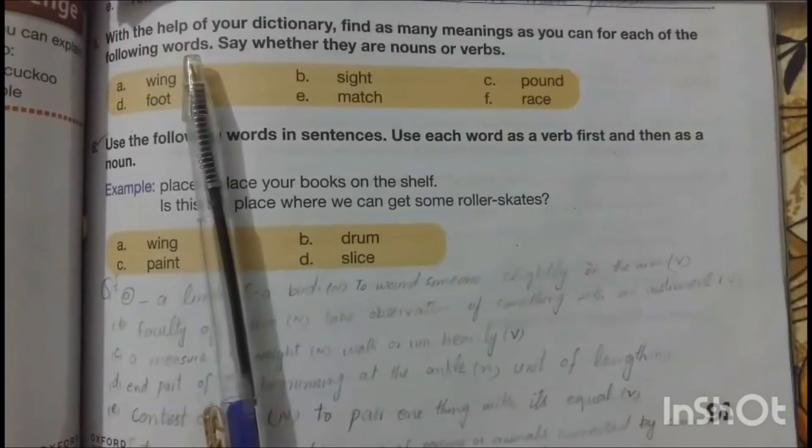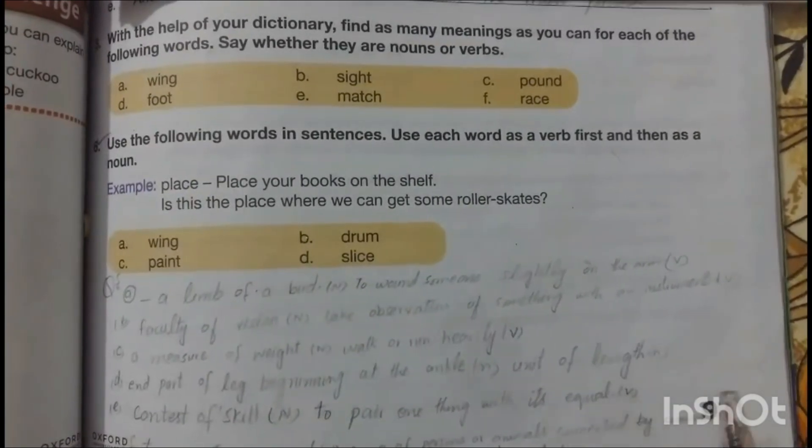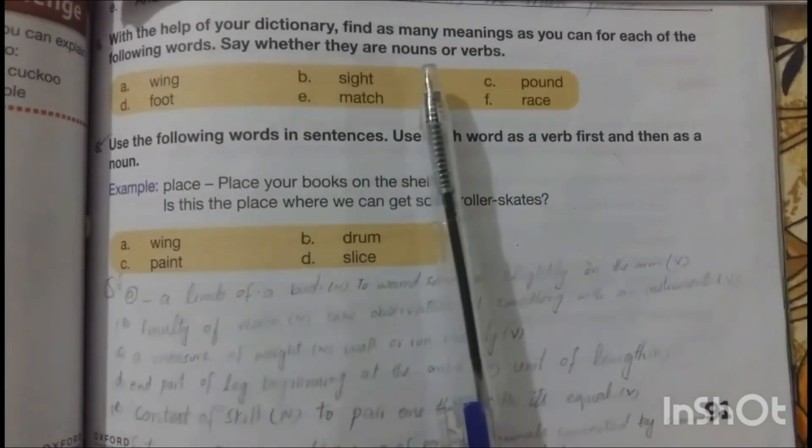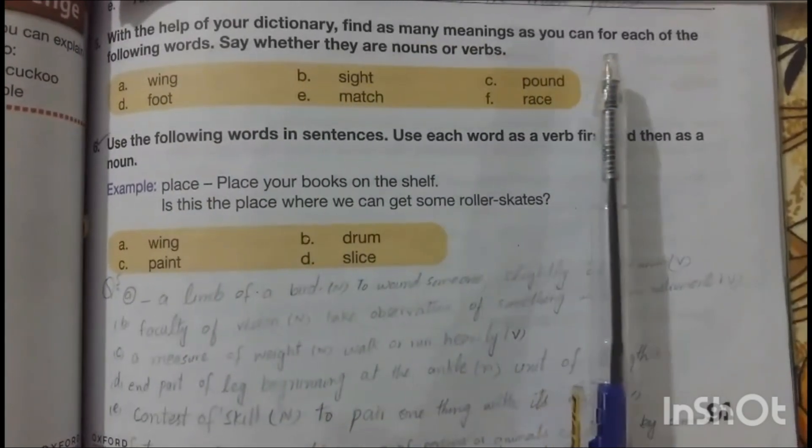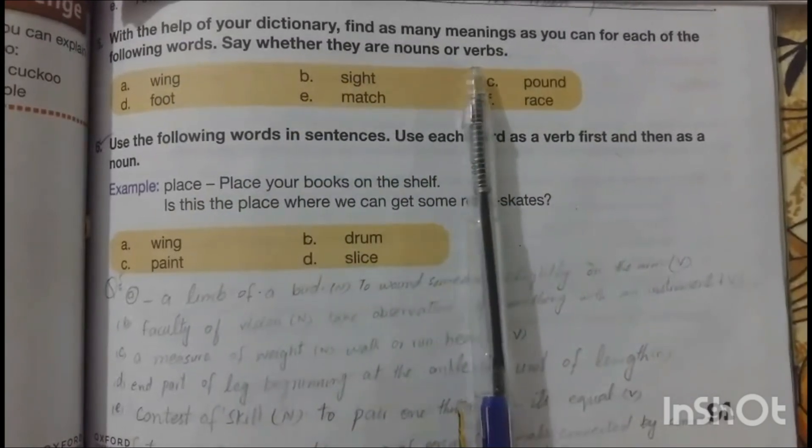We will do question number 5 of Act B that is on page number 91. The question is, with the help of your dictionary, find as many meanings as you can for each of the following words. Say whether they are nouns or verbs.